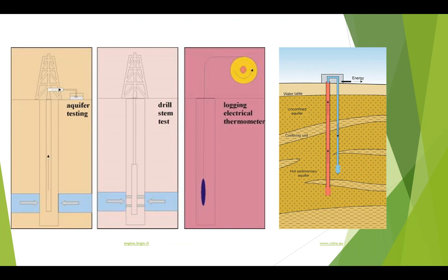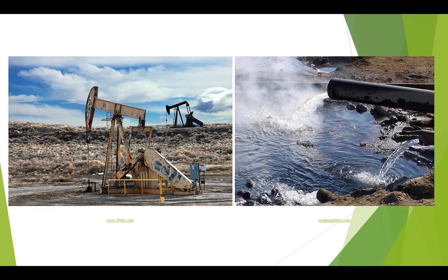Deep aquifer systems can be reached within three kilometres of the Earth's crust and offer moderate heat flow. Warm water is a by-product produced from wells when oil and gas is exploited, and can be efficiently and economically implemented to produce electricity and other forms of energy.